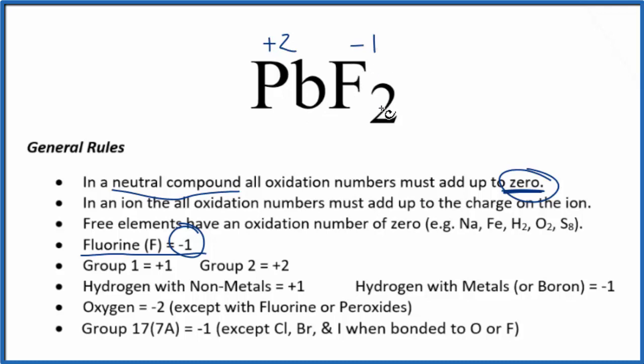So we can check our work. Two times minus one, that's minus two. Minus two and plus two, that gives us zero since this is a neutral compound.